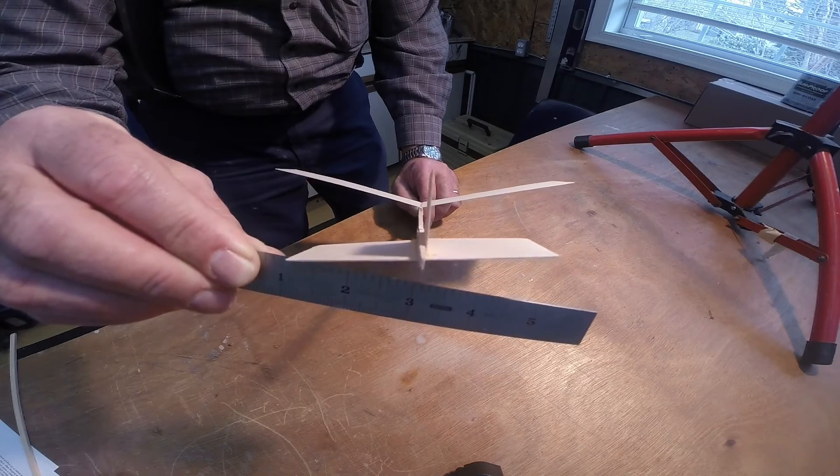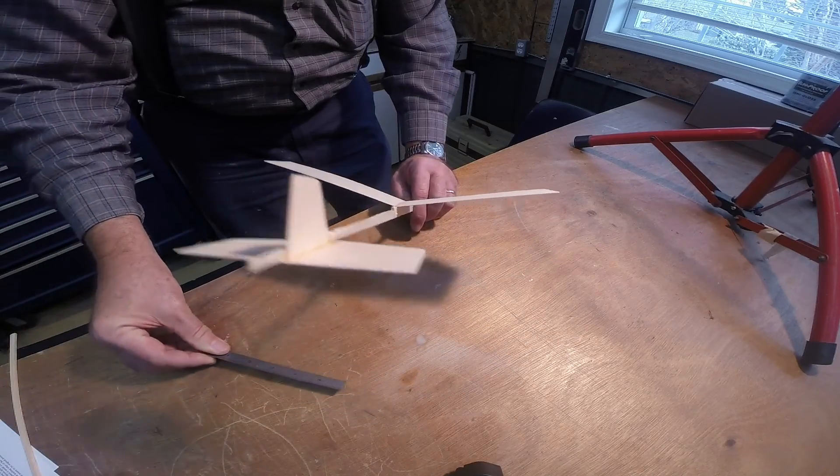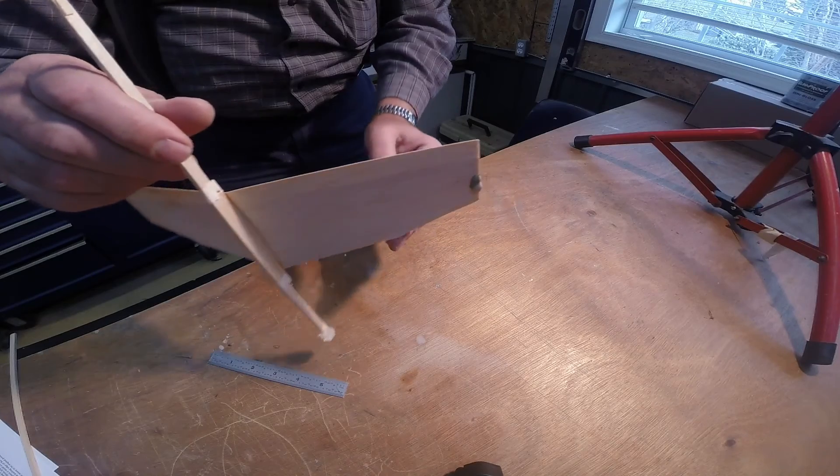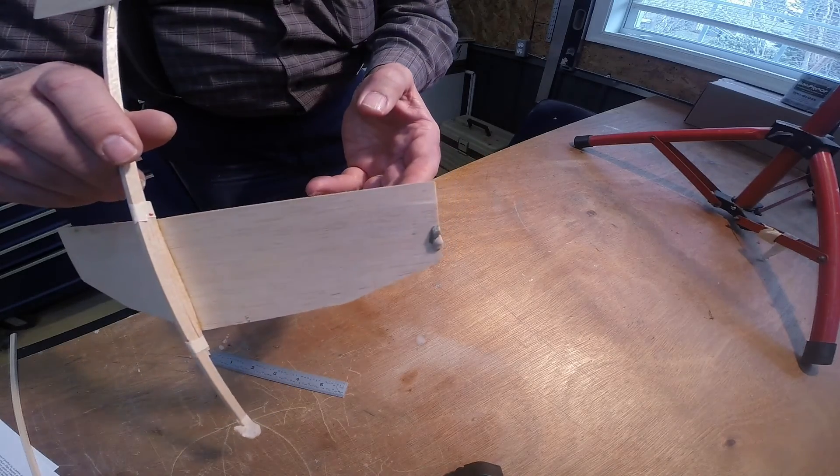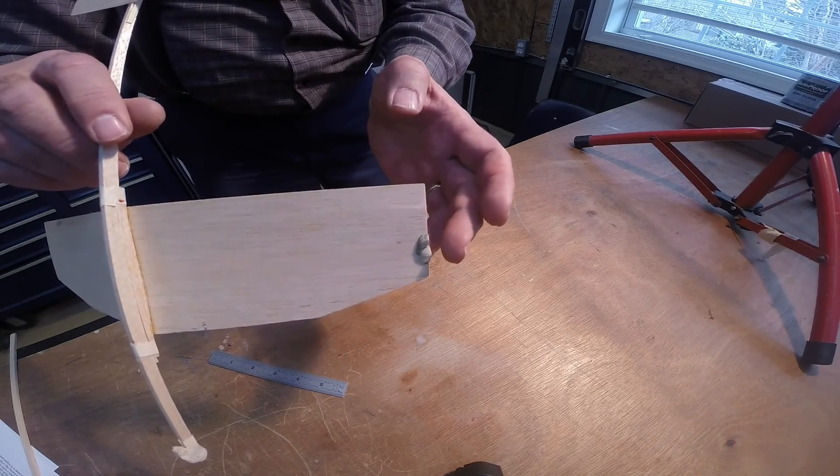If the right tip of the stabilizer, when viewed from the rear, is raised, the glider should turn right, while raising the left tip should make the glider turn left. As a last resort, a small piece of clay can be added to the tip of the wing on the inside of the circle as well.